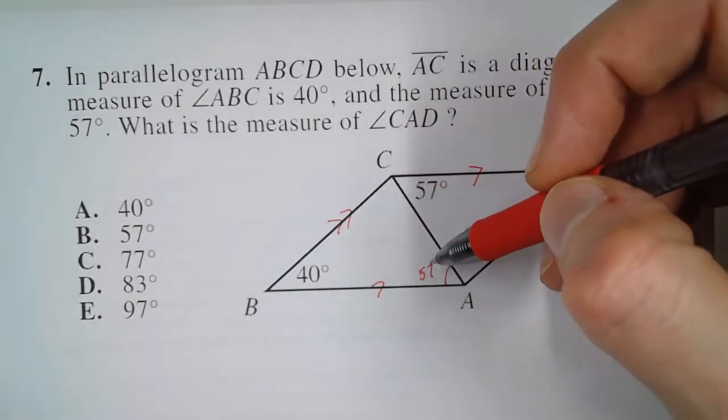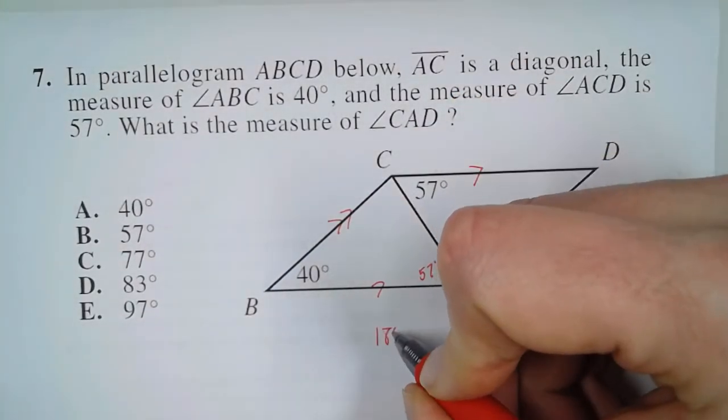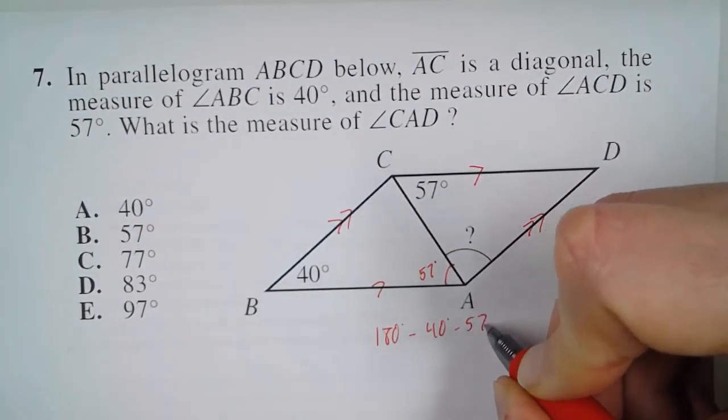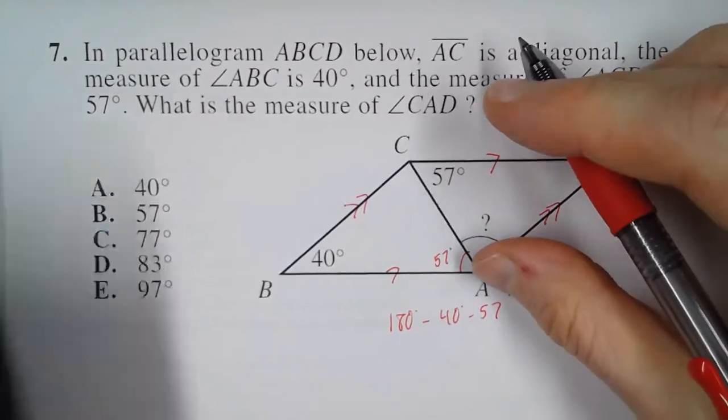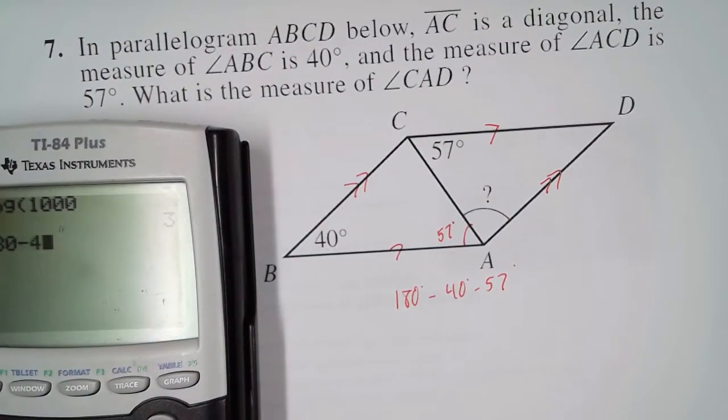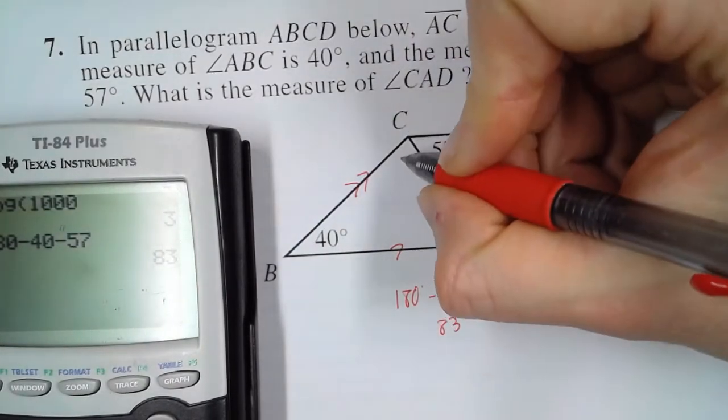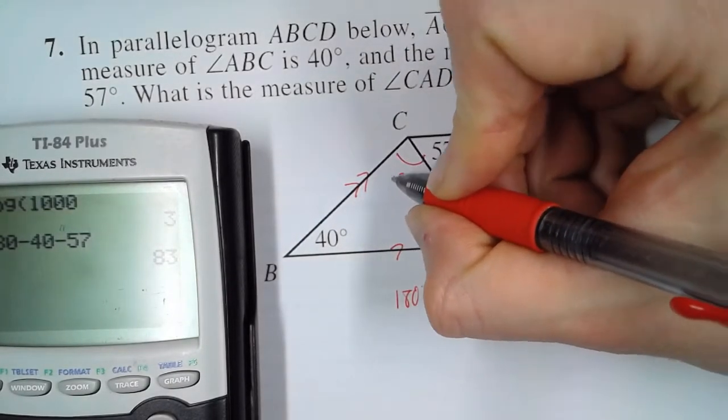So if we take these two angles and subtract them from 180, minus 40, minus 57. Let's see what we get. 180 minus 40 minus 57 gives us 83 degrees. And that's the measure of this angle up here.